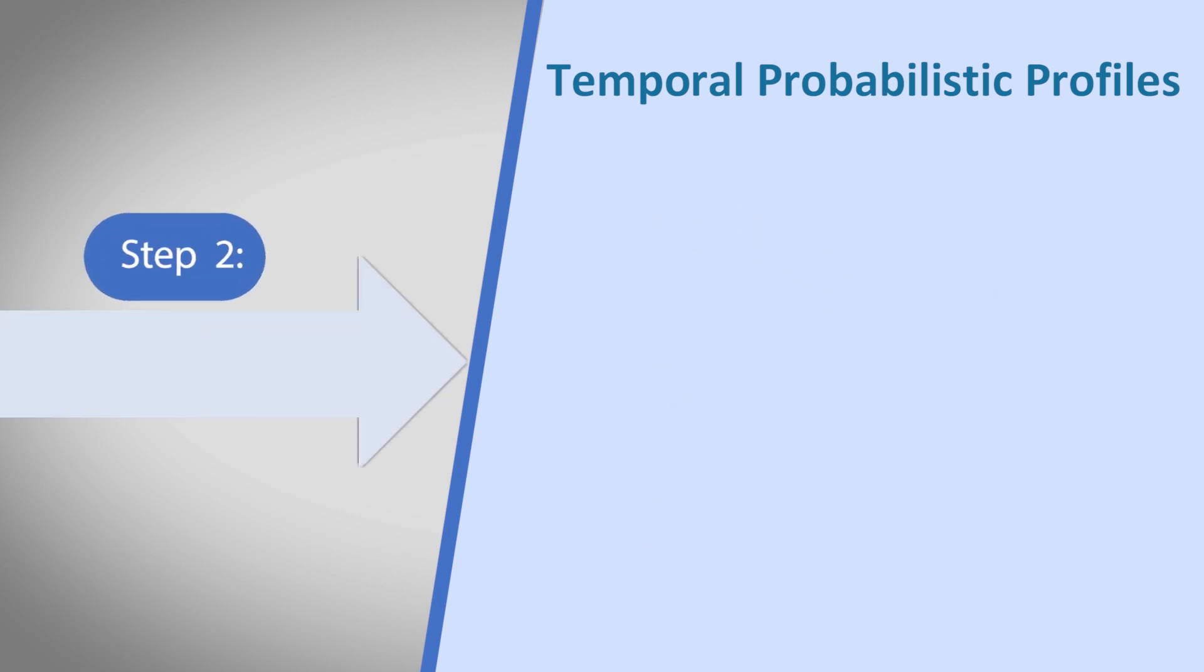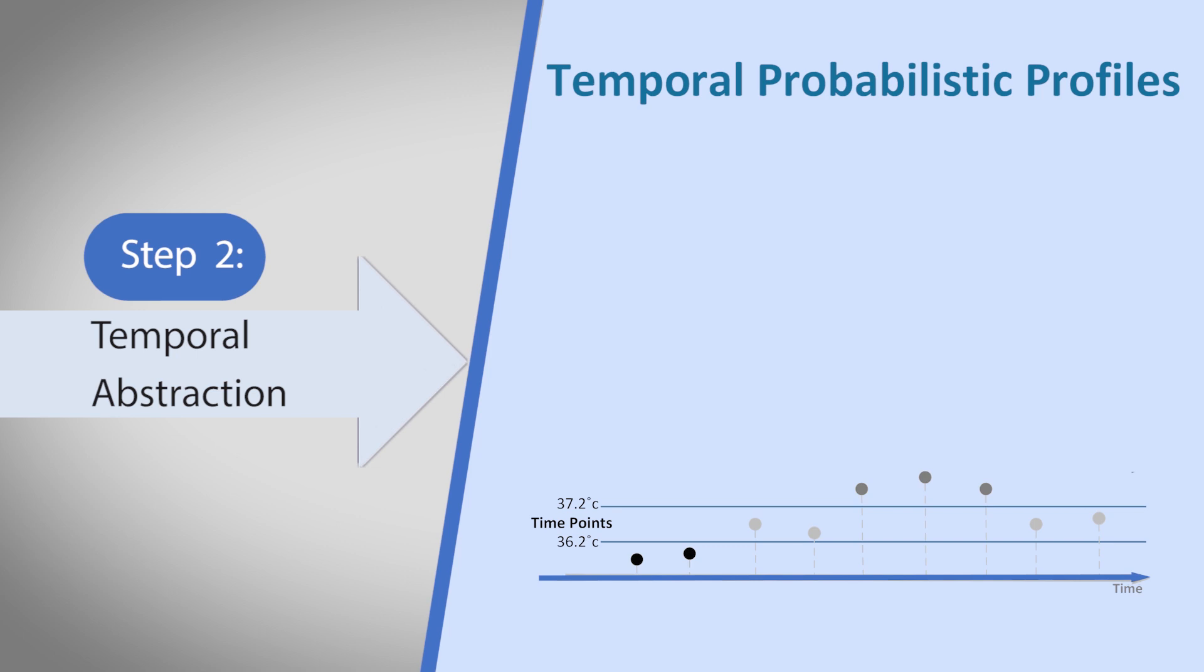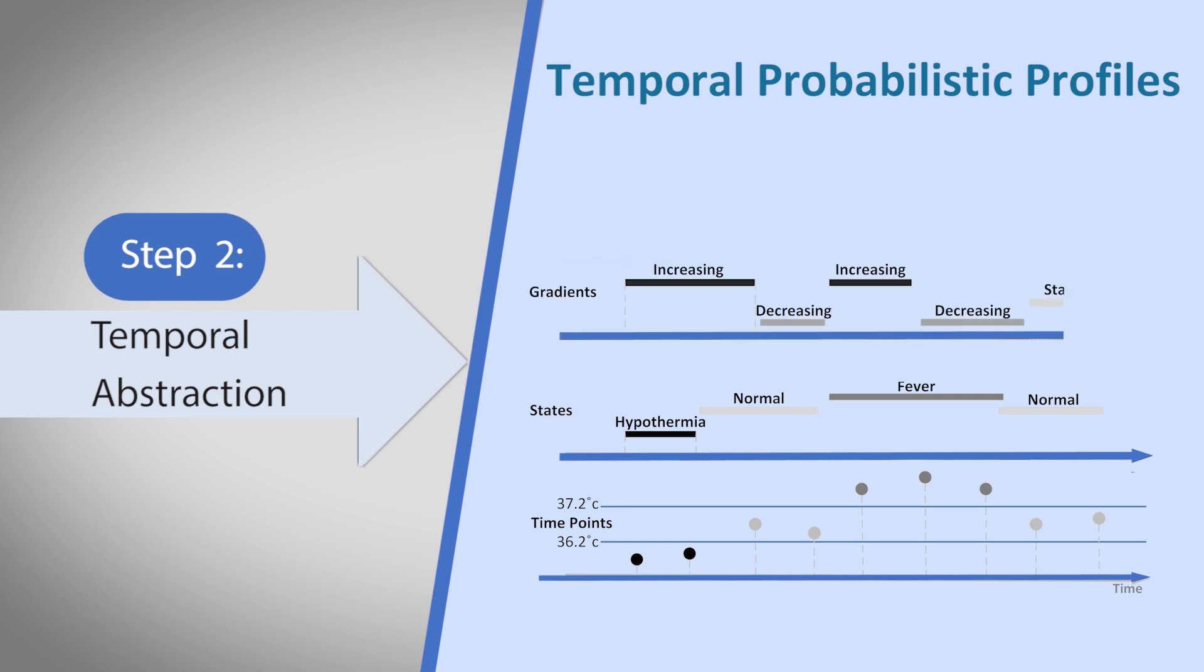Then the data are abstracted into three interval-based concepts. State abstraction classifies values into abstract concepts, while gradient abstraction indicates direction of change. Lastly, our newly proposed trend abstraction detects global trends and smooths cases of frequent small changes.